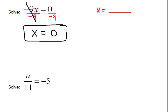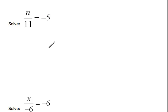For the next example, we have n over 11 is equal to negative 5. Well, keep in mind our goal always, we want to get the variable alone. We want to know what does n equal? Well, right now, n has this 11 attached to it.